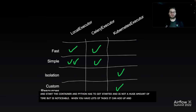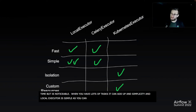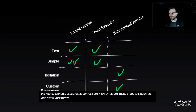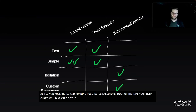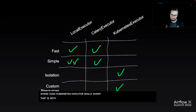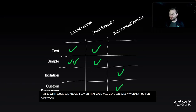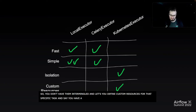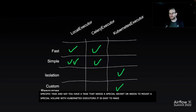Conversely, simplicity: Local executor is about as simple as you can get. Celery executor has a little extra complexity but it's not too bad. Kubernetes executor you could argue is the most complex, but there's a caveat — if you're running Airflow in Kubernetes with Kubernetes executor, most of the time your Helm chart will end up taking care of that complexity for you. Where Kubernetes executor really shines is with isolation: Airflow will generate a new worker pod for every task, so you don't have them intermingled. That also lets you define custom resources for that specific task — a special secret or a special volume — so that task and only that task gets access to those things.